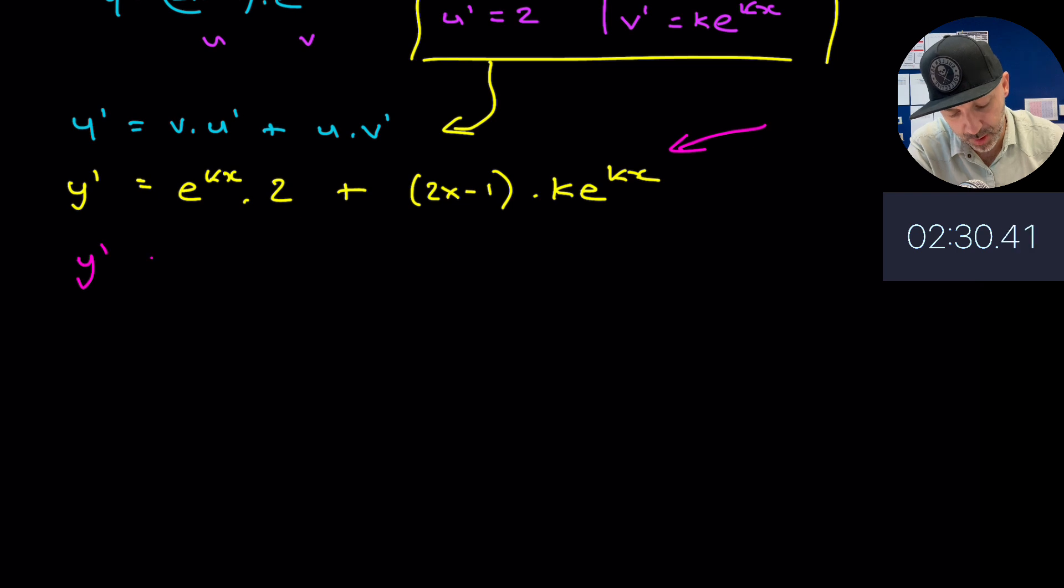In doing so, I'll write down that y prime is equal to e - now remember x is 1 now - so e to the k times 2, so that'll be 2e to the k, plus plugging 1 into this will be 2 minus 1 which is 1, times k e to the k, so it's just k lots of e to the k.